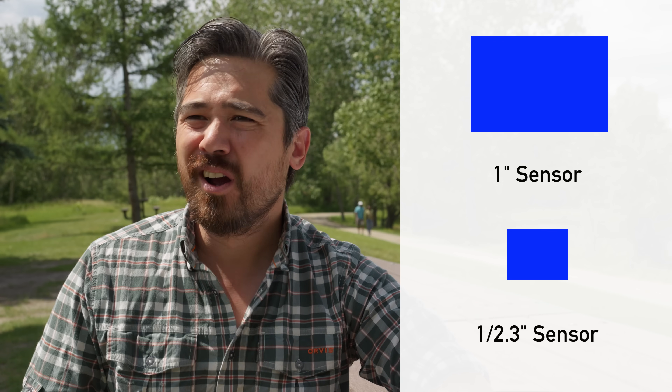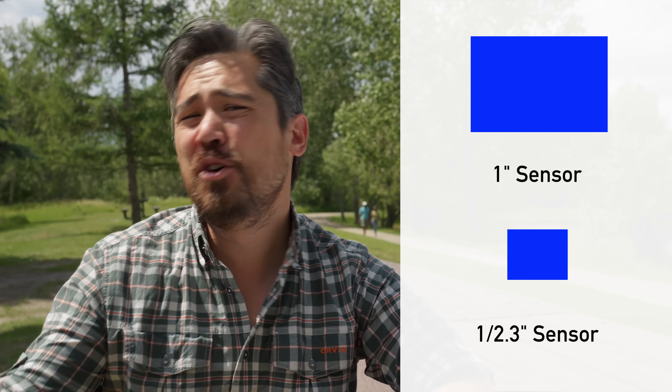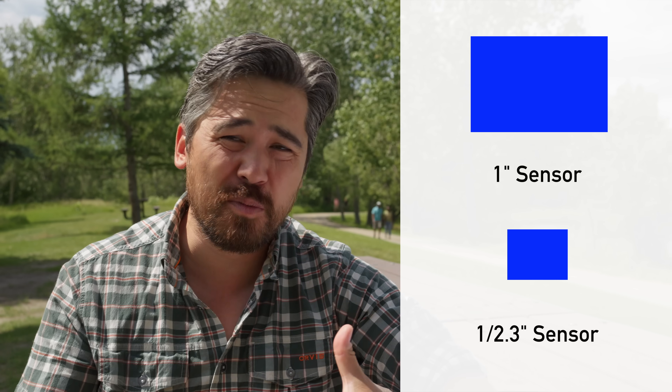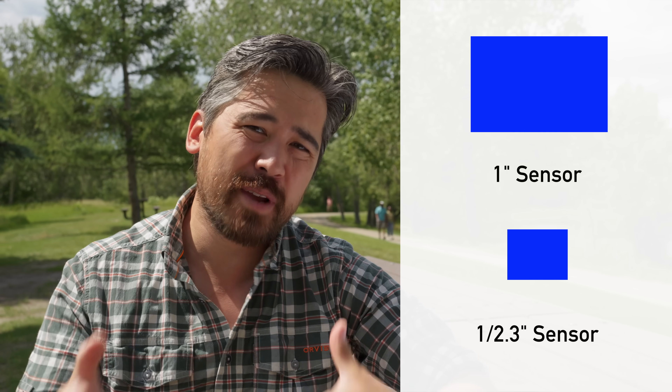So the root of the problem when it comes to the naming of smaller digital sensor sizes is that they're given with this imperial set of measurements and fractions. For example, some common ones would be a 1-inch sensor or a 1/2.3-inch sensor. It's very easy to assume that that measurement has something to do with the actual size of the sensor itself.